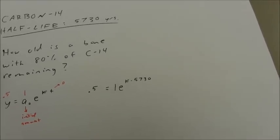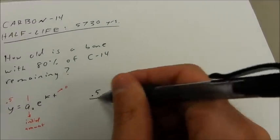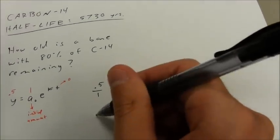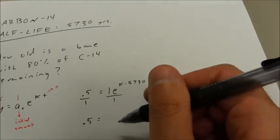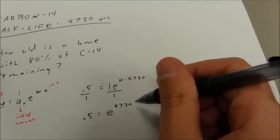Well, this is almost written in a form that I can convert to logs. Technically, whatever this coefficient is, you need to divide out. Obviously, in this case, that's not really going to change anything. But my equation is 0.5 equals e to the 5,730k.